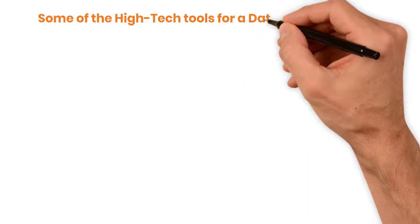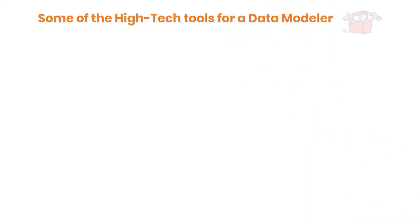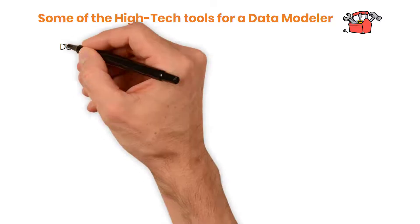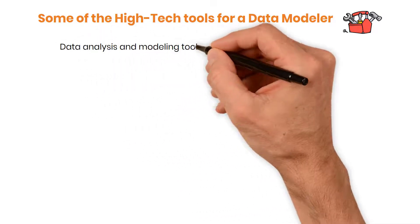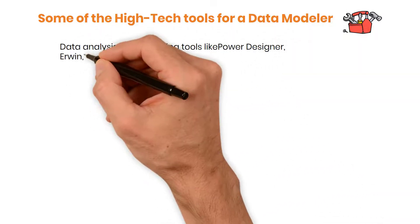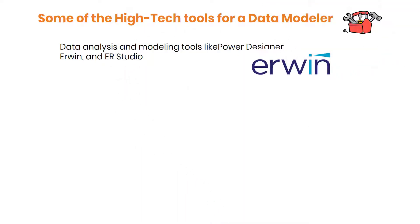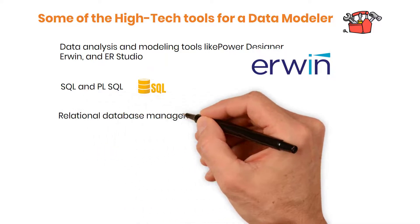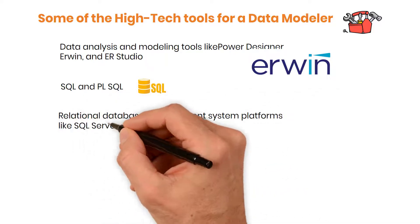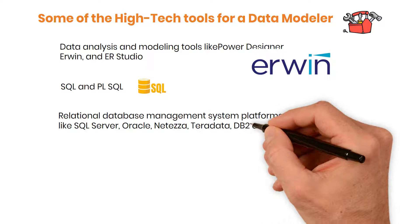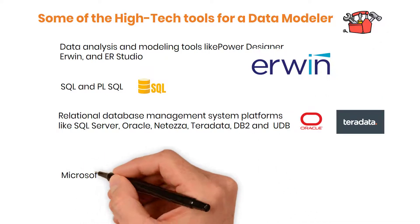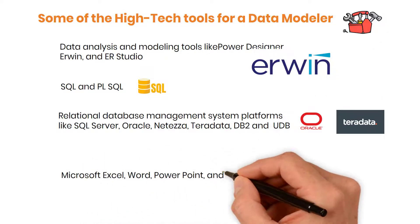What are some of the high-tech tools for a data modeler? As a data modeler, you make use of a lot of high-tech tools to get the job done. Here are some of the tools that employers are looking for data modeler applicants to have experience with: data analysis and modeling tools like Power Designer, Erwin, and ER Studio; SQL and PL/SQL; relational database management system platforms like SQL Server, Oracle, Netezza, Teradata, DB2, and UDB; and Microsoft Excel, Power BI, PowerPoint, and Visio.